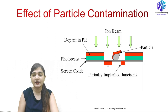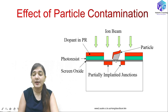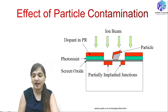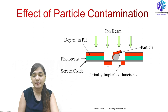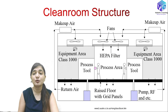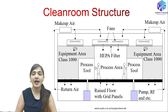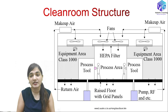We can see the particle contamination effect on doping as well. If a particle is present here, it affects the implanted junction. Where the particle is located, there is no implantation because the particle blocks all the ion beams coming upon it, resulting in a partially implanted junction. This is a defect that lowers yield and decreases profit.